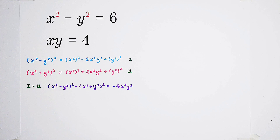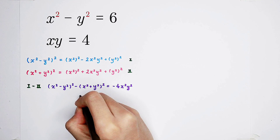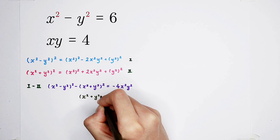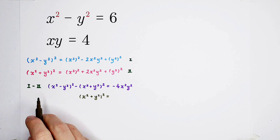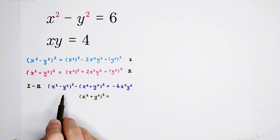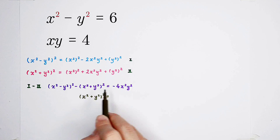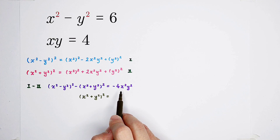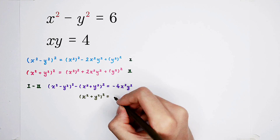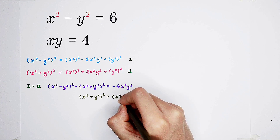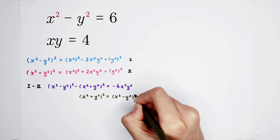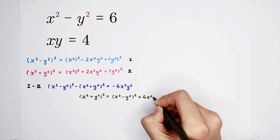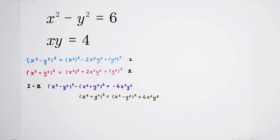Now we can get this. So, x squared plus y squared, all squared, equals x squared minus y squared, all squared, minus the right-hand side — minus negative four times x squared y squared. So it's going to be: x squared minus y squared, all squared, plus four times x squared y squared.